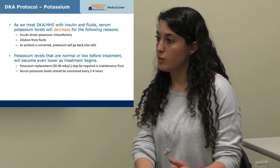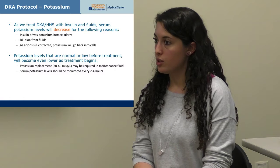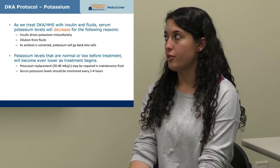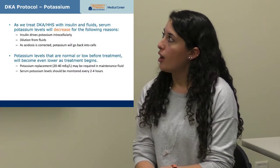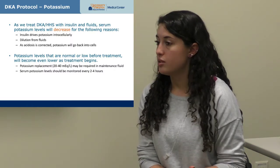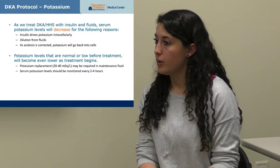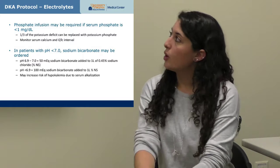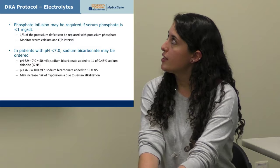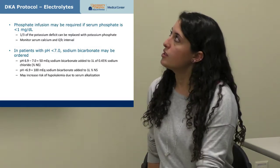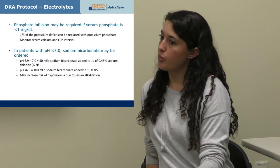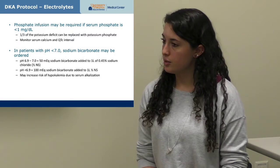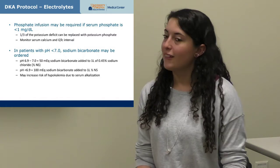Potassium levels must be monitored every two to four hours throughout DKA treatment. If levels are low or normal at baseline, potassium 20 to 40 mEq/L can be added to maintenance fluids. Phosphate is also monitored — if less than 1 mg/dL, replace using potassium phosphate, which can provide about a third of the potassium replacement while simultaneously addressing phosphate. When replacing phosphate, monitor calcium and QTc interval closely, as hypocalcemia can develop.